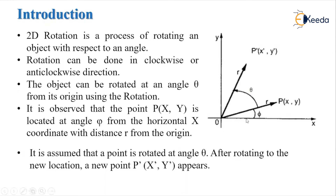Now see this figure. The object can be rotated at an angle theta from its origin. Here we have two angles: phi and theta. Phi is the angle between the x-axis and the radius r to point P. Point P is located at an angle phi from the horizontal x-coordinate with distance r from the origin.